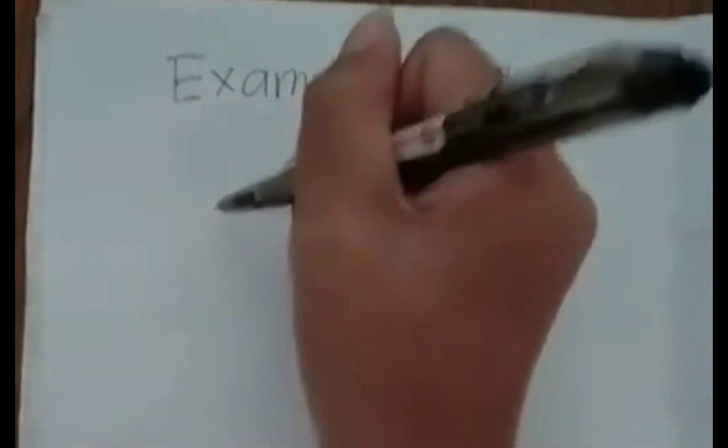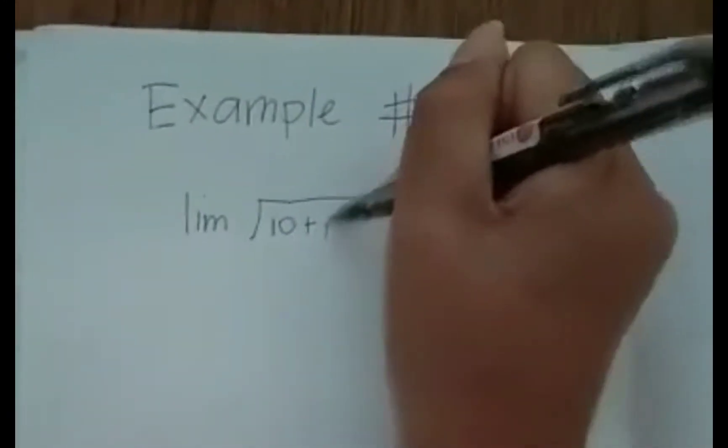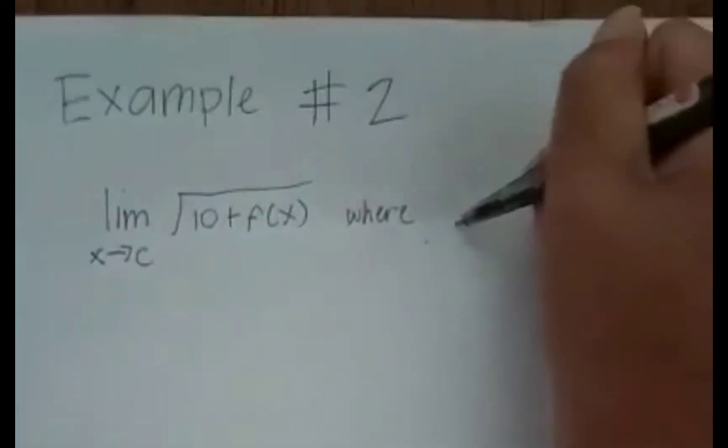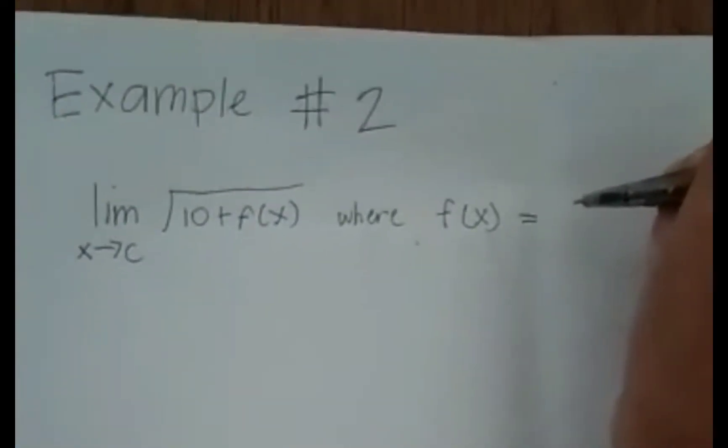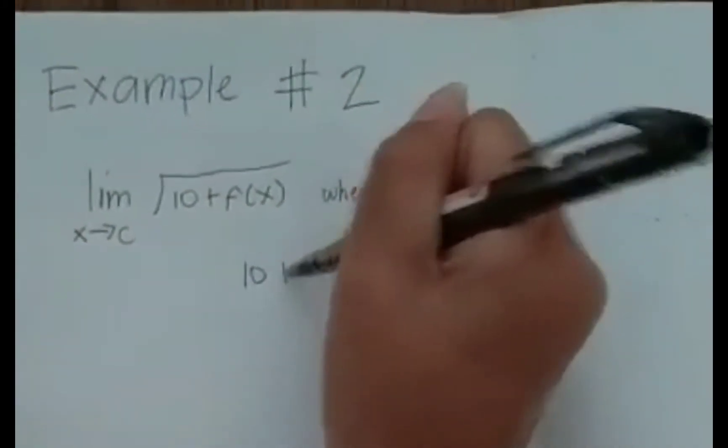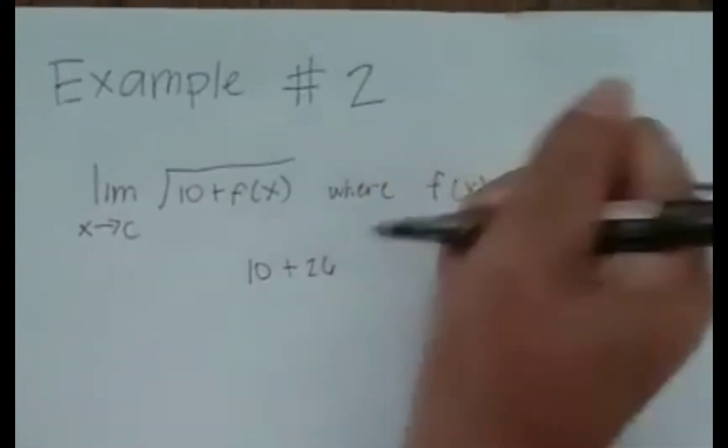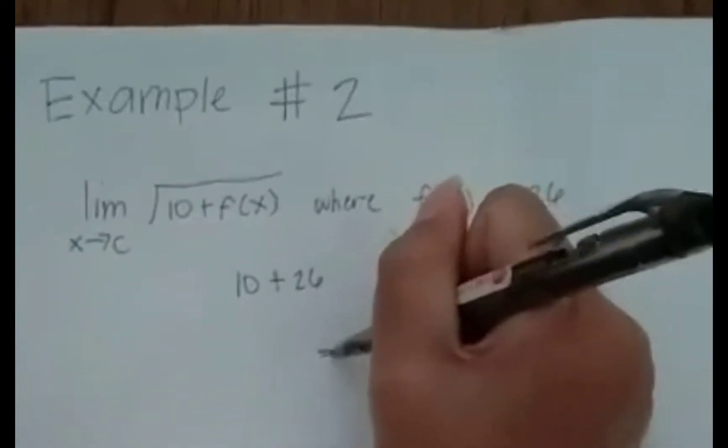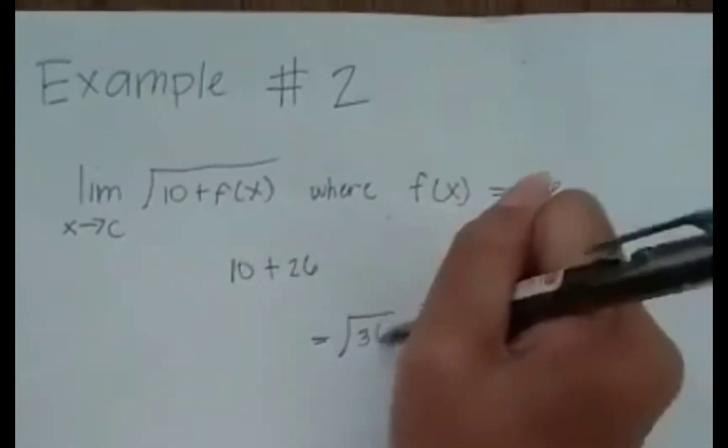Example number 2. Limit of square root of 10 plus f(x) as x approaches c, where f(x) equals 26. 10 plus 26 equals 36. Square root of 36 equals 6.